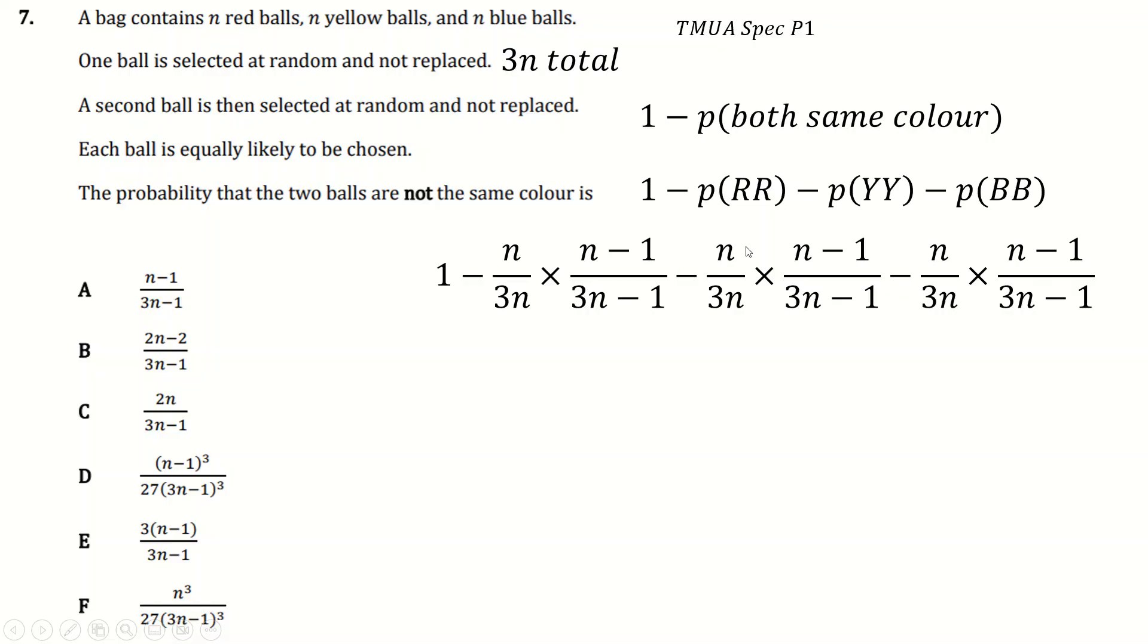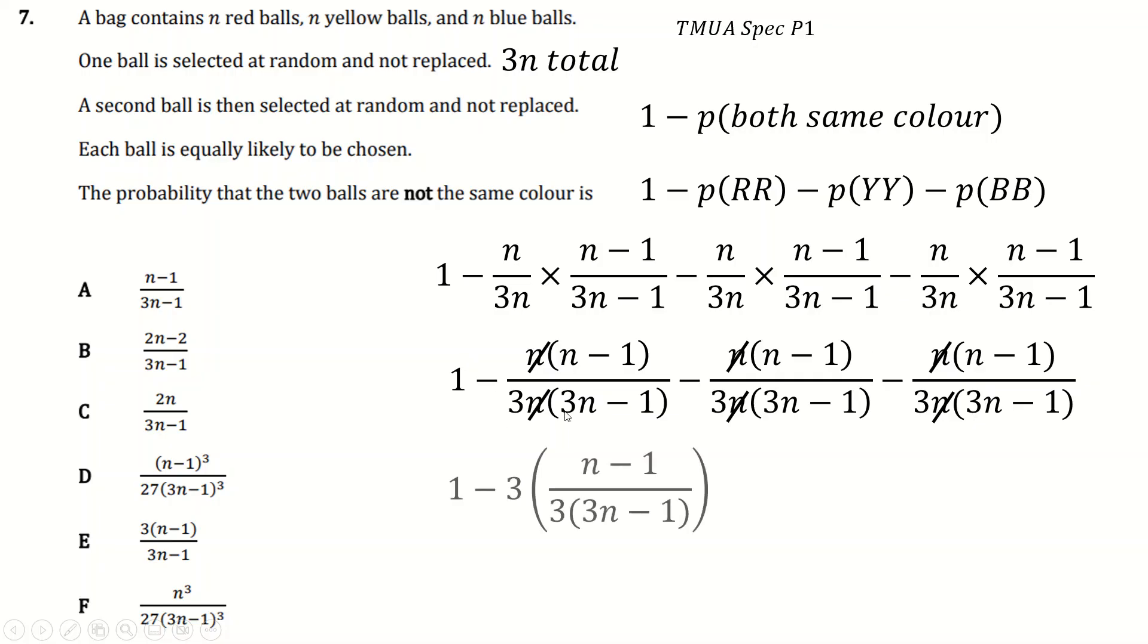You should recognize this kind of thing from GCSE. Do the same with yellow, do the same with blue. And now when you're doing this kind of algebra, don't expand stuff until you actually have to. This N can cancel with this N. You're looking for things that cancel straight away. So cancel there, cancel there, cancel there. That gets rid of any quadratic that we might have to deal with. Notice how this is just three lots of the same thing.